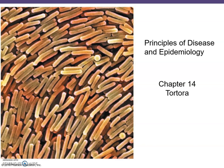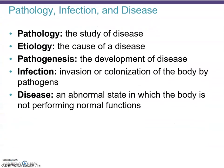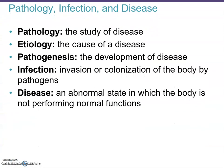Next up is our chapter on epidemiology — really it's principles of disease and epidemiology. We're going to look at terms first, as usual. Pathology is the study of disease, etiology is the study of the cause of the disease, and pathogenesis is how the disease develops.